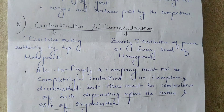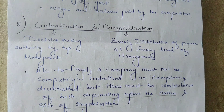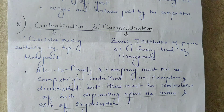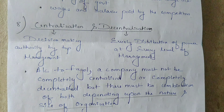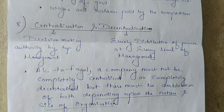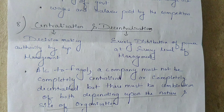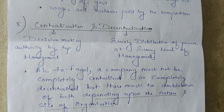For example, centralization policies can be applied on major decisions relating to setting up of organizational goals, plans and policies. But decentralization policy can be applied on routine work such as purchase of raw materials, fixing targets of workers, etc.